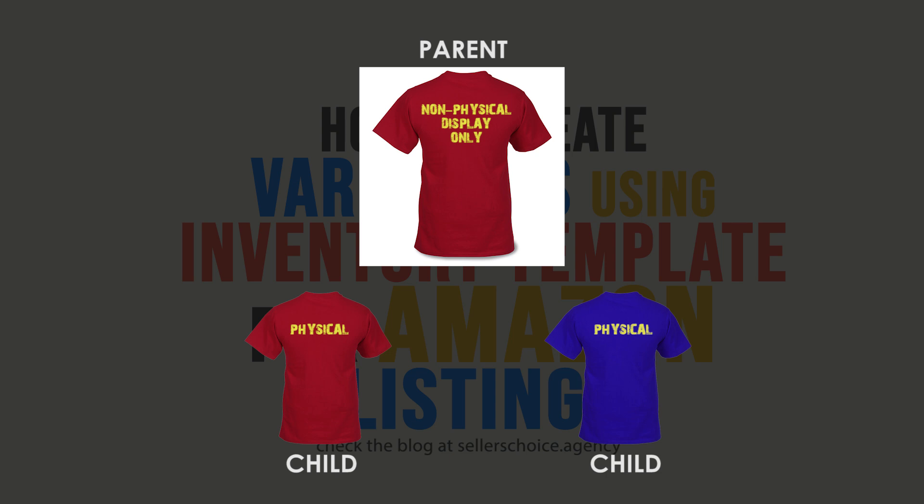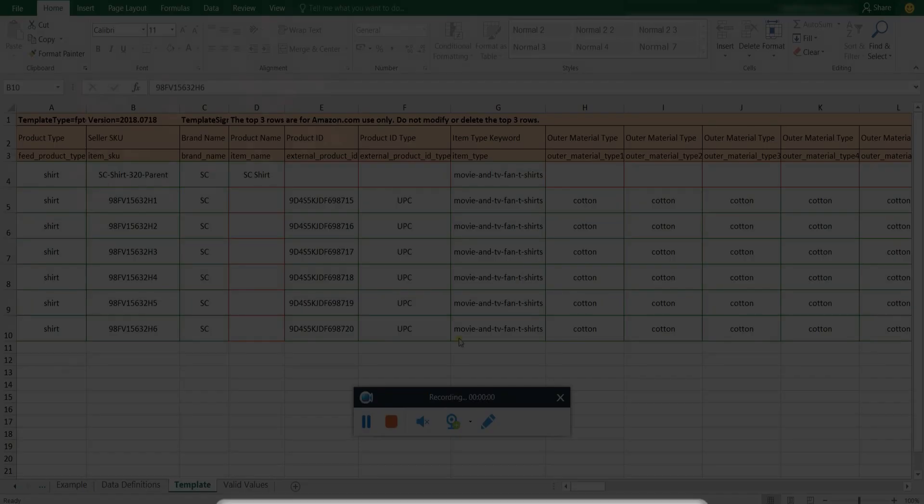Variation theme is the relationship between the parent and the child. The variation theme defines how related products differ from each other. For example, in the clothing category, child products can differ from each other by size or color. We will go through the important columns in our inventory file to ensure that you're going to have a successful inventory file template with variations. So let's get started.